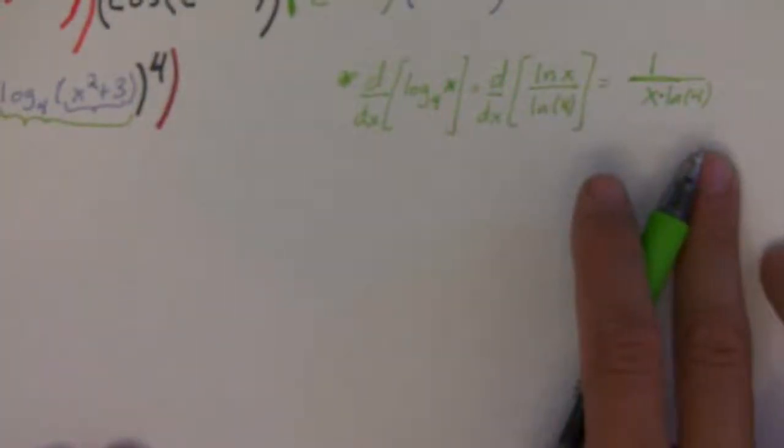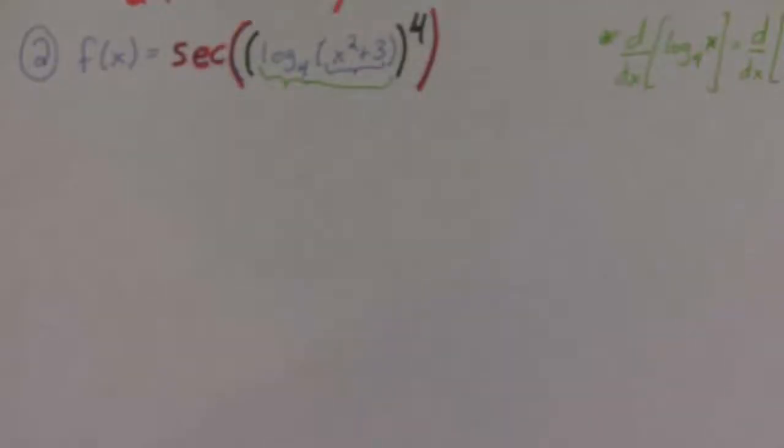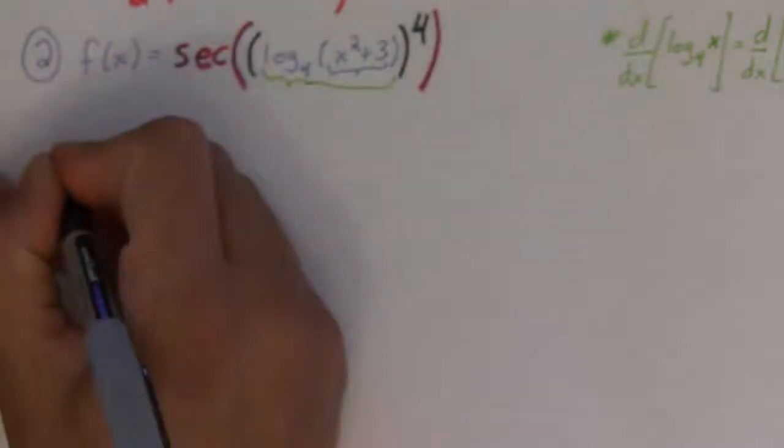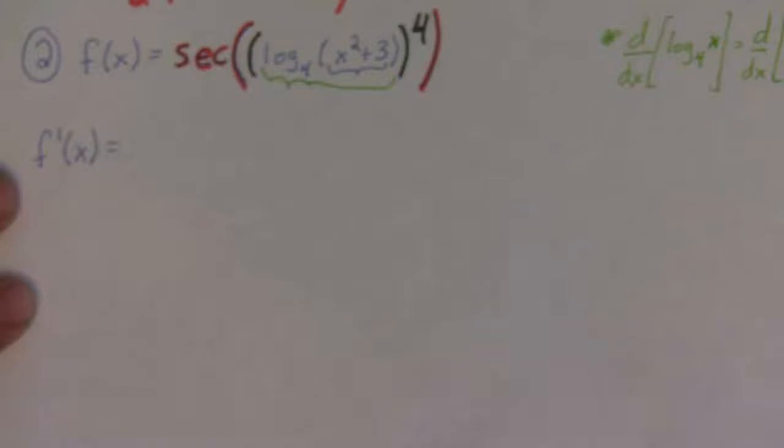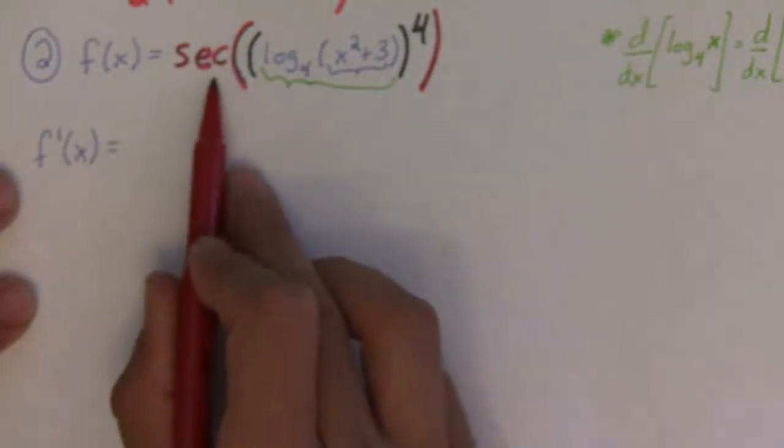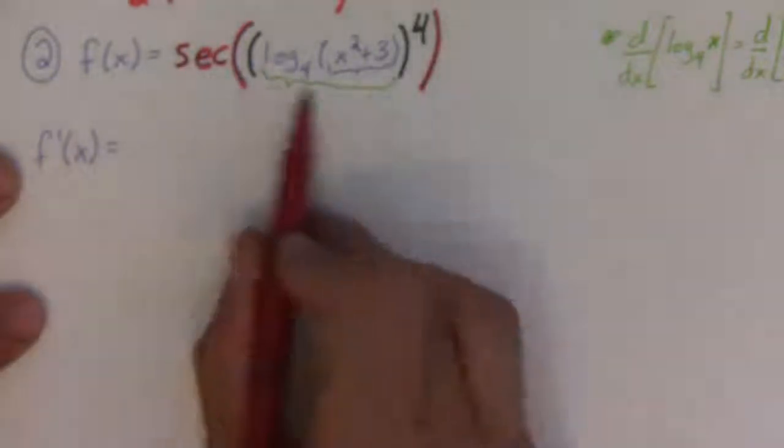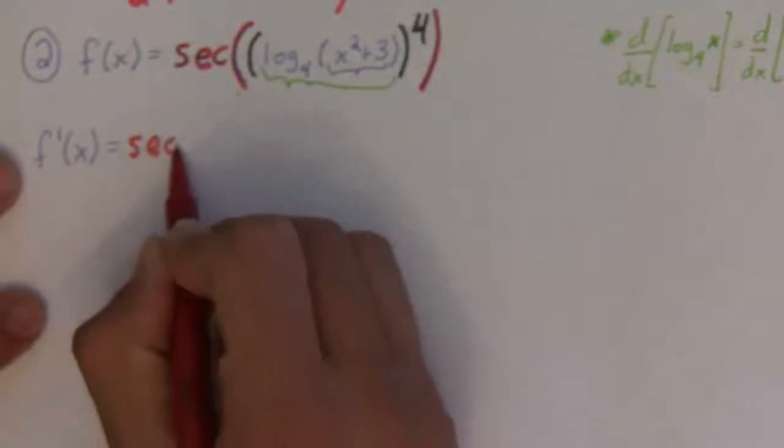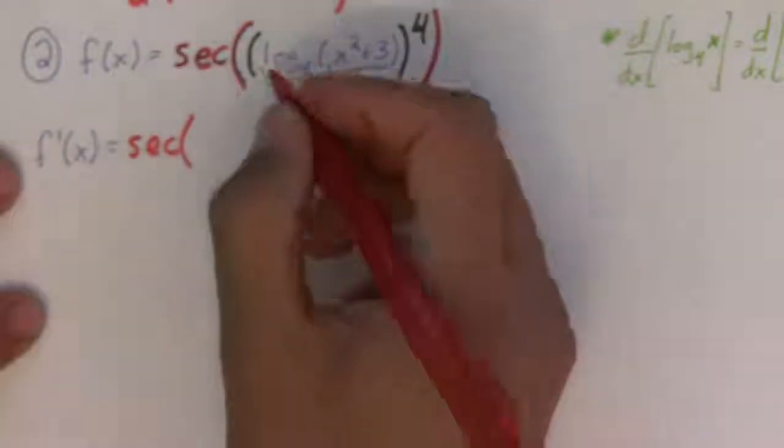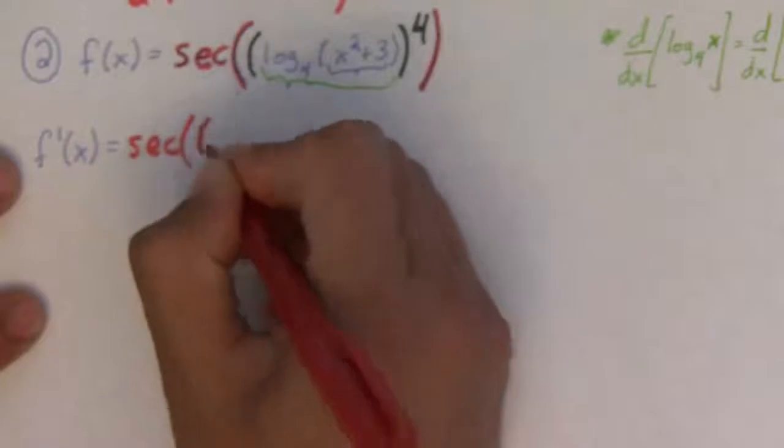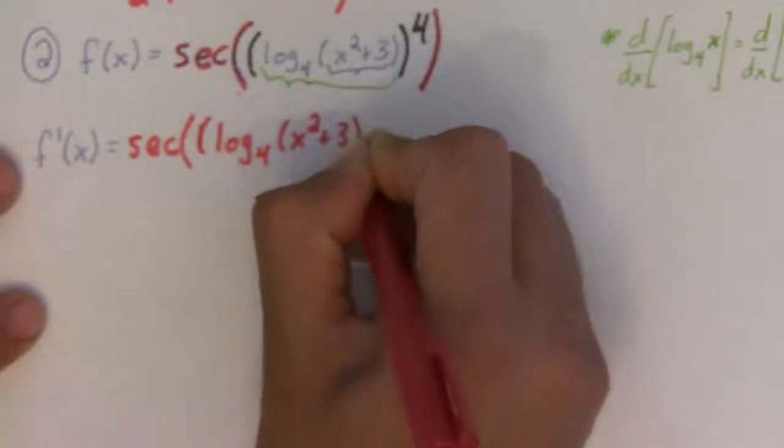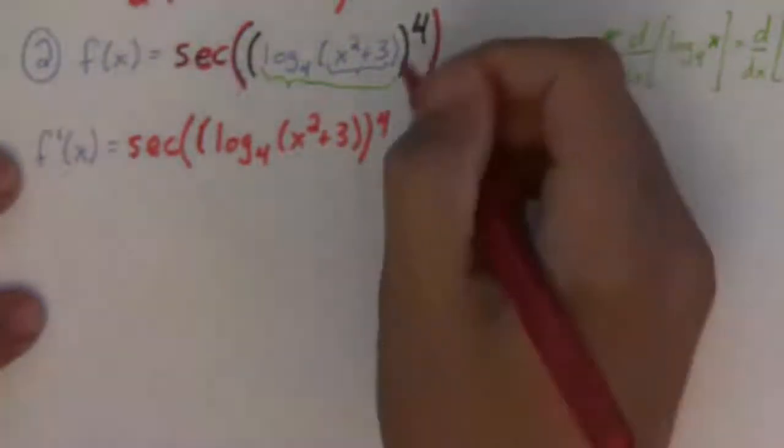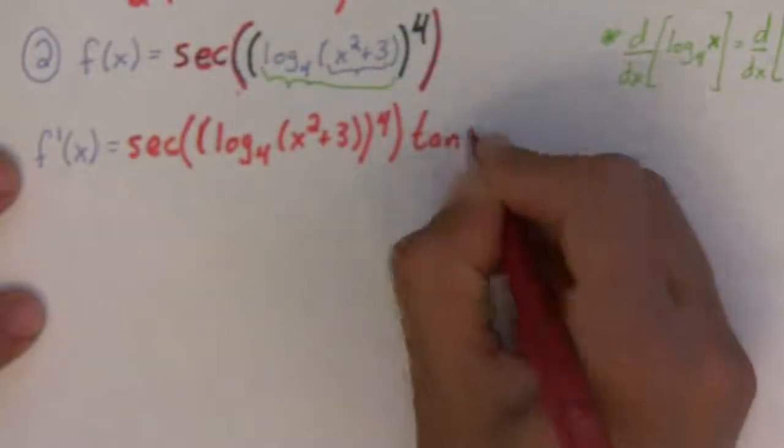And, we're going to use that right now when we find the derivative. Okay. So, let's get started. First things first. The derivative of secant. I'm going to need a lot of room. The derivative of secant is secant x tan x. Okay. But, remember you have to leave everything alone. So, this is going to be secant of all of this stuff.